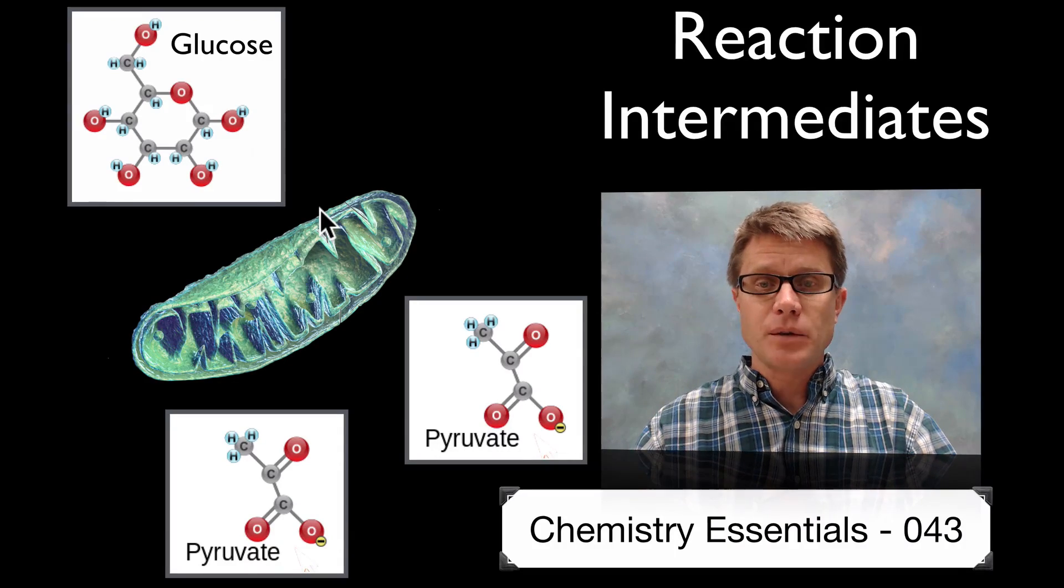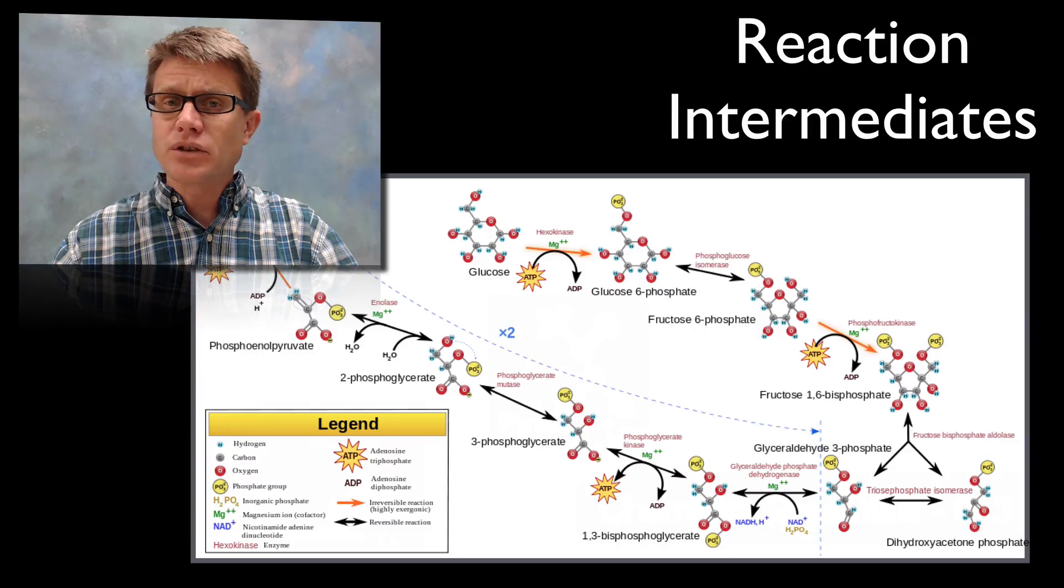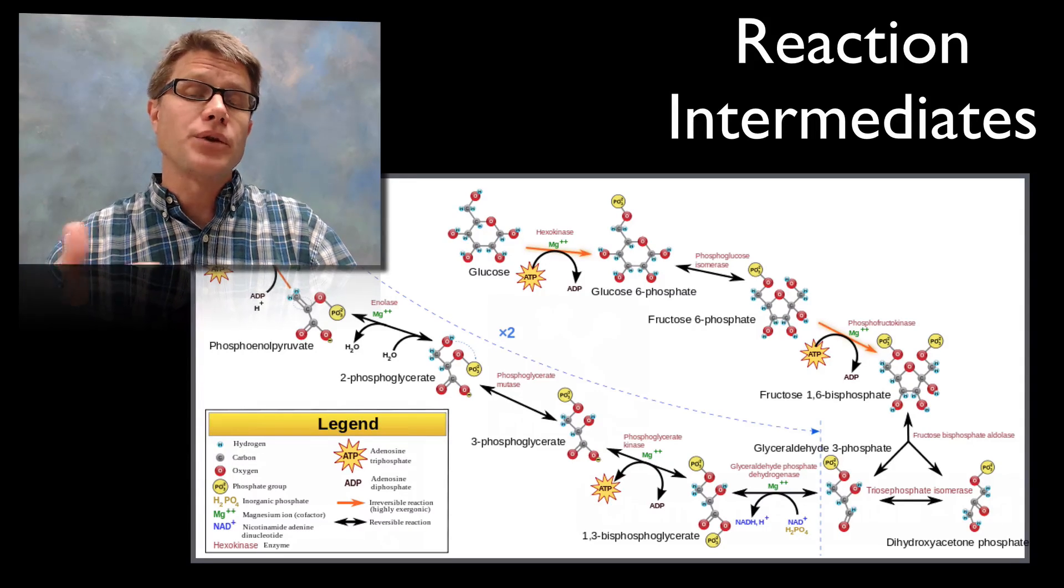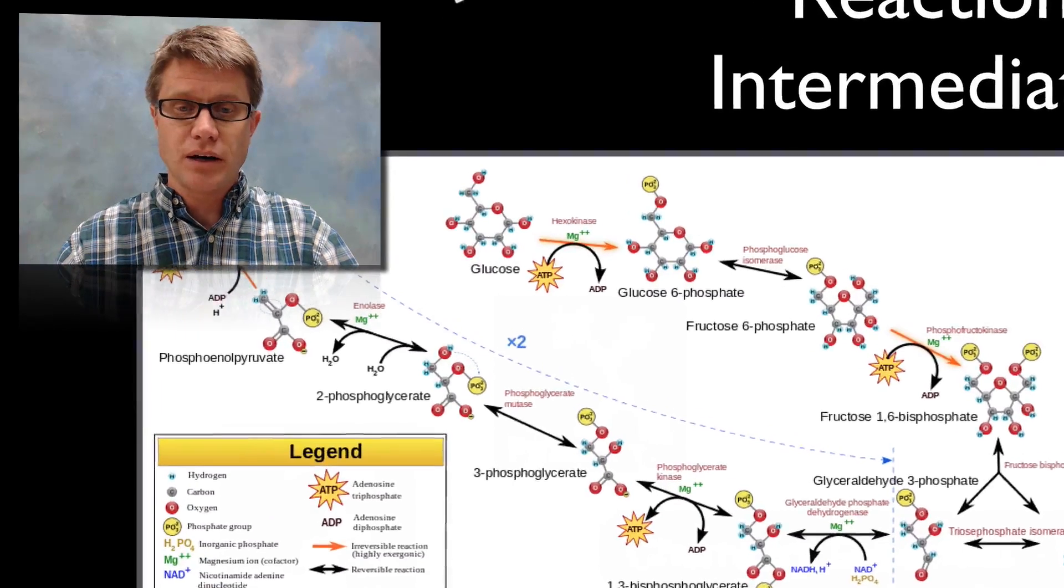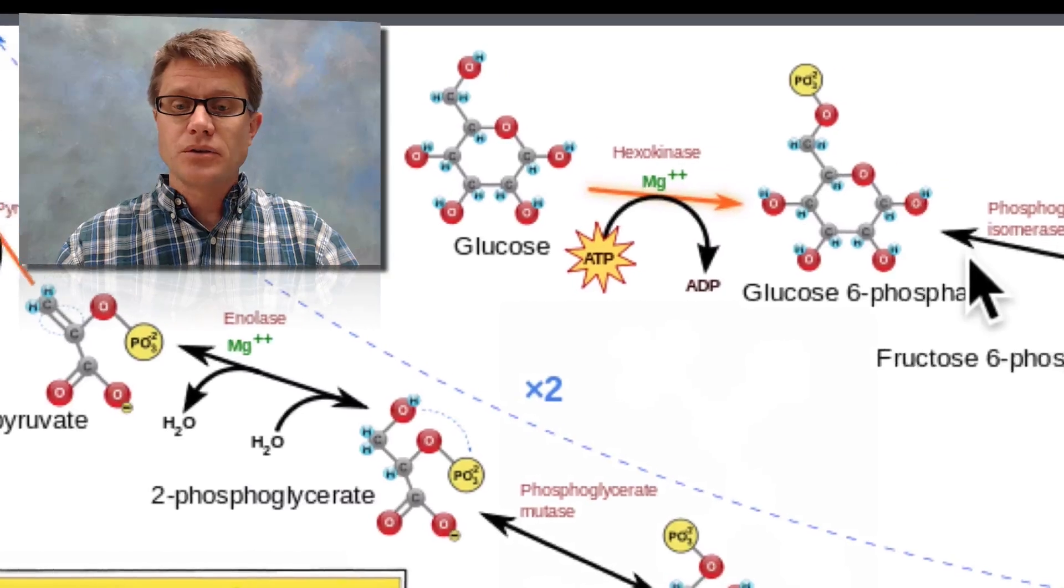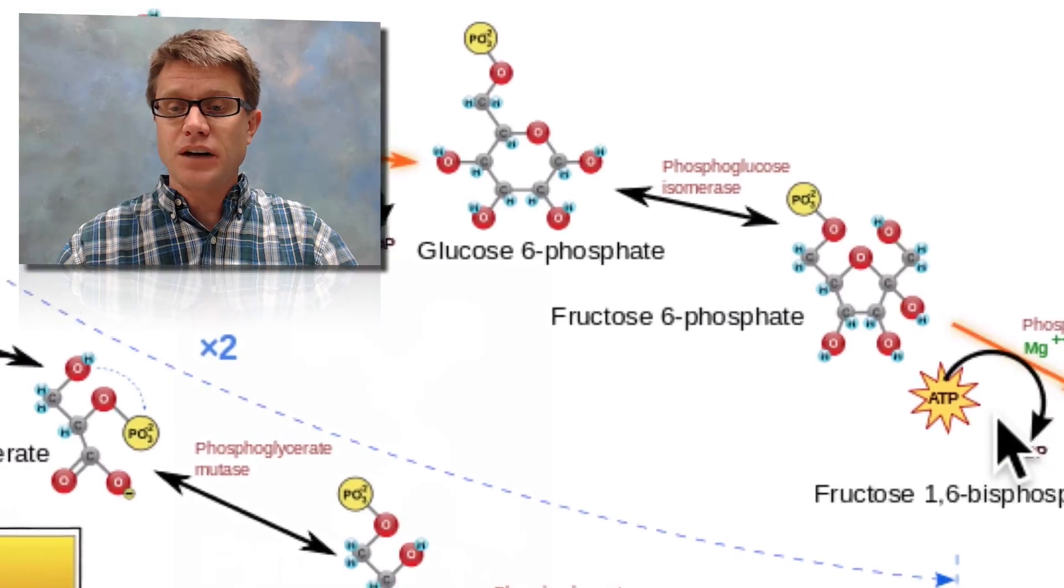But it doesn't occur in one step. In other words, there are lots of elementary steps along the way and therefore lots of reaction intermediates along the way as well. We break that glucose into glucose 6-phosphate, fructose 6-phosphate.